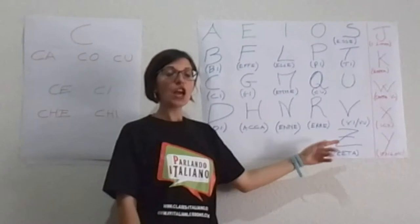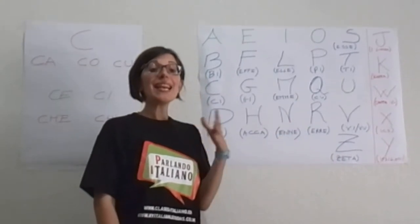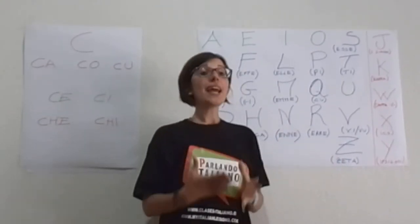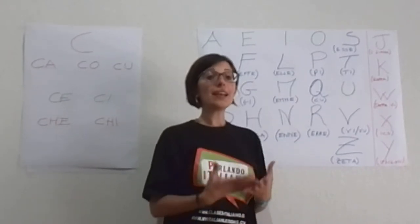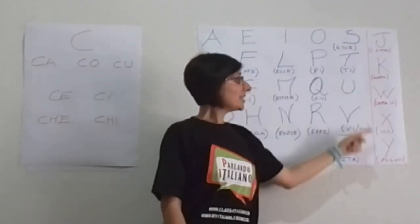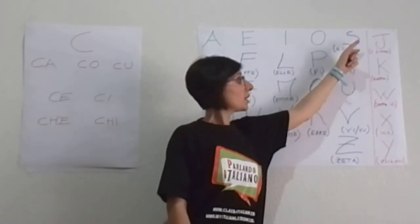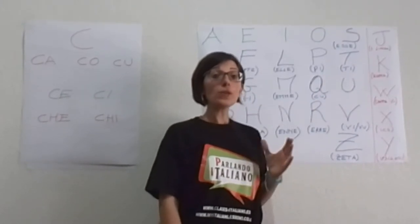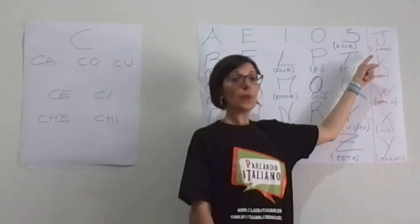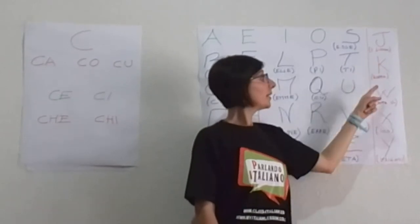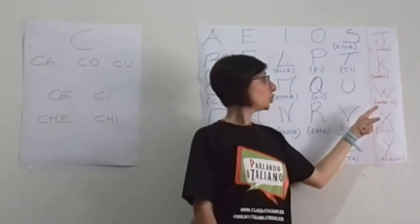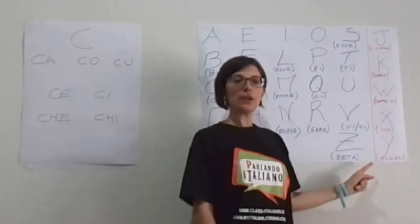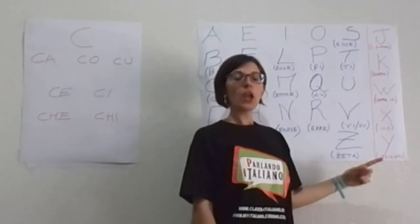Ci sono poi delle lettere straniere che non appartengono all'alfabeto italiano. So, these letters do not belong to the Italian alphabet, and we call them I lunga, K, W, X e Y.